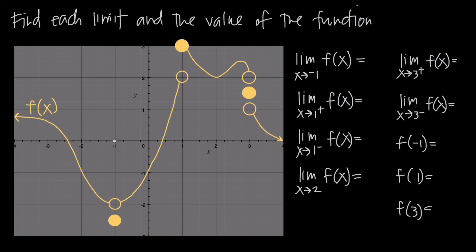We're interested in the limit as x gets really close to that value. Intuitively we have two options: this hollow circle or this filled-in circle. When finding a limit, look for the continuous part of the function — imagine tracing your finger along the graph. Starting from the left and approaching x equals negative 1 from either direction, you end up right at this point, which corresponds to y equals negative 2 on the y-axis. So the limit is negative 2.